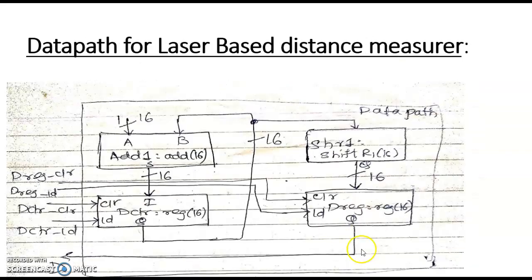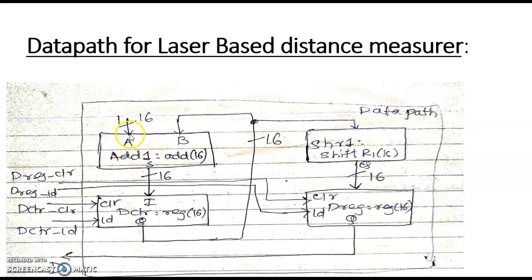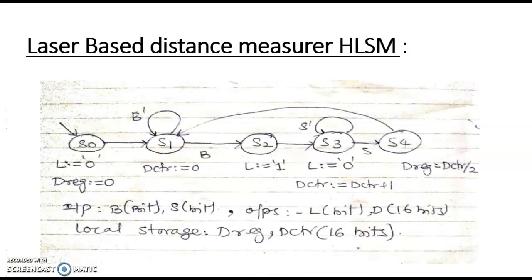The D register stores the final distance value. We need a counter which counts from when the laser starts until S is received. We need two registers: one to store the count value and one to store the shifter output. The shifter is used for the division operation — finding DCTR divided by 2. The adder has one input as 1 and another input as the count value from DCTR. This count value is loaded into the DCTR register when the DCTR register load signal is 1. The clear signal of both registers clears them.